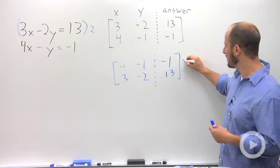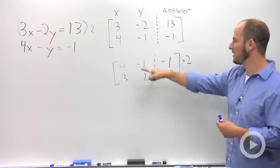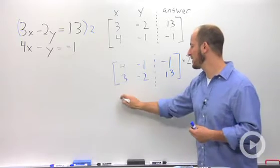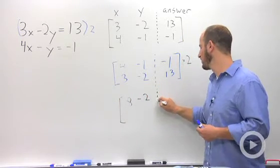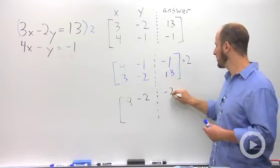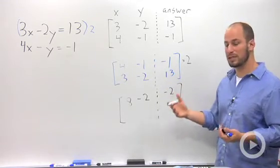You can use a scalar multiple. Basically, I could say, let's multiply this by 2. That top equation then becomes 8, negative 2, negative 2. The bottom equation stays the same.